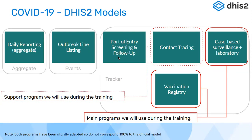The port of entry package could be implemented at airports, land borders, sea borders, or ports. Two key modules were available: case-based surveillance and laboratory information, and contact tracing. In this course, we will look at the case-based surveillance and laboratory program and the vaccine registry. Programs shown in shaded regions will be used for support for various custom web apps. The main programs you will be looking at are the case-based surveillance and laboratory information program and the vaccination registry program.